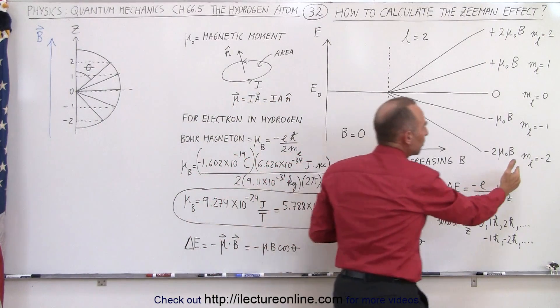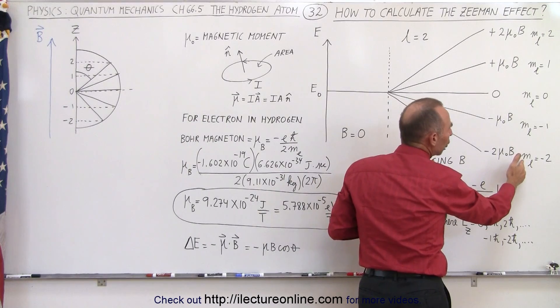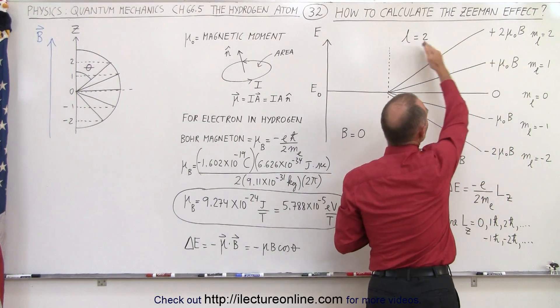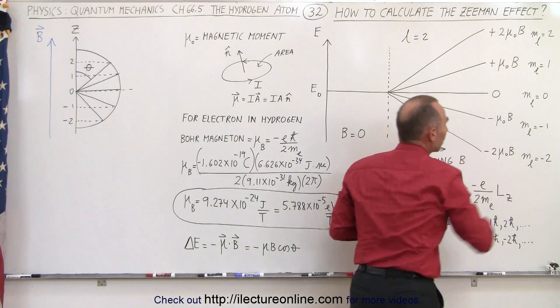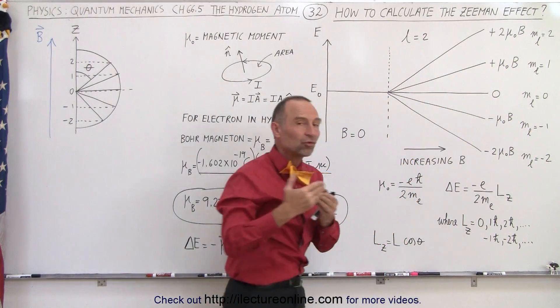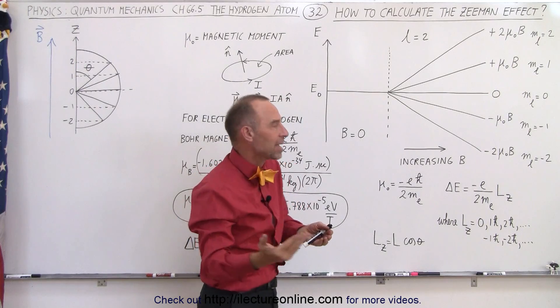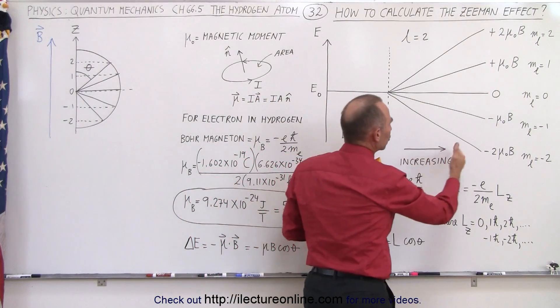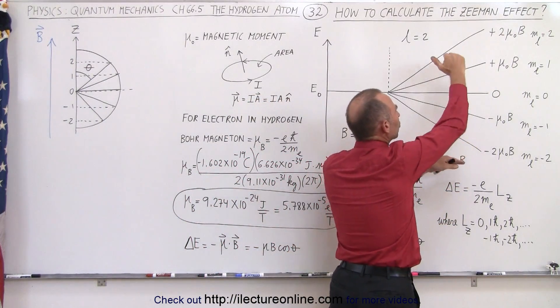The amount depends on two things. First, the orbital magnetic quantum number. When L equals 2, there can be 5 different values for the orbital magnetic quantum number, so therefore we have 5 different levels. Second, the strength of the magnetic field. As the magnetic field becomes stronger, the energy differences become stronger as well.